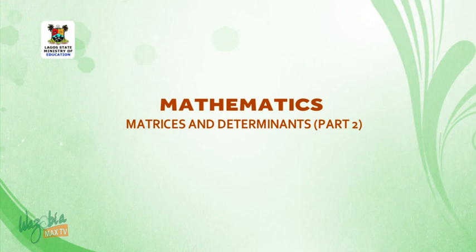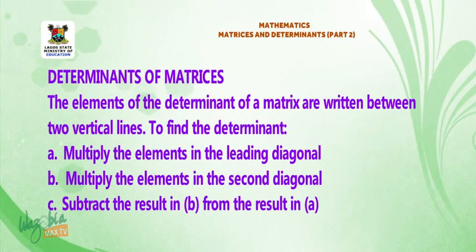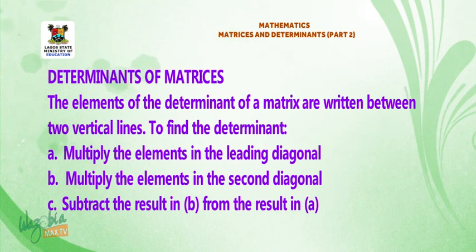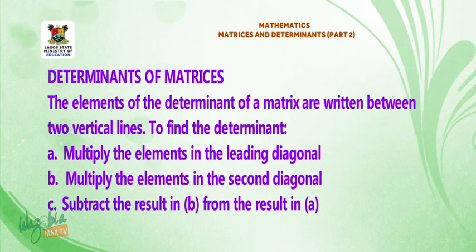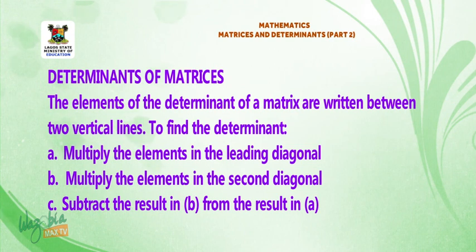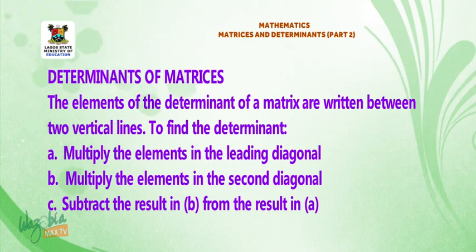Welcome back. Determinants of matrices. The elements of the determinant of a matrix are written between two vertical lines. To find the determinant: A. Multiply the elements in the leading diagonal. B. Multiply the elements in the second diagonal. C. Subtract the result in B from the result in A.